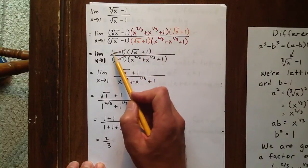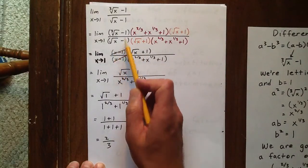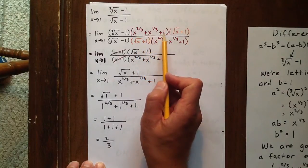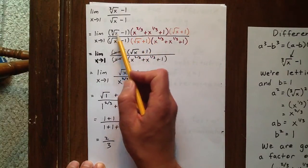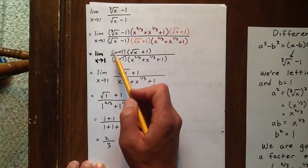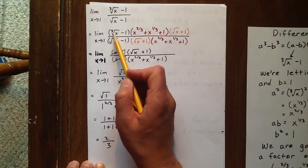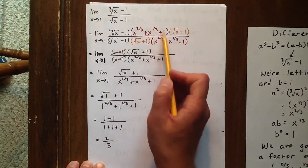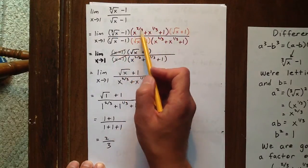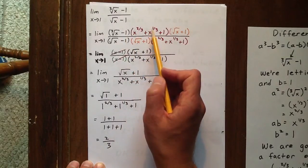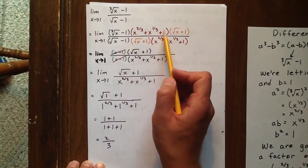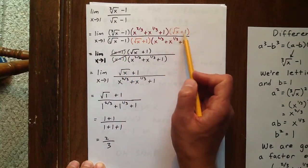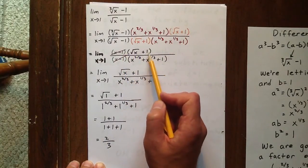Now, in the numerator, we have the cubed root of x minus 1 times x to the two-thirds plus x to the one-third plus 1. The cubed root of x times x to the two-thirds is x, and the cubed root of x times x to the one-third gives plus x to the two-thirds plus x to the one-third minus x to the two-thirds minus x to the one-third minus 1. So we've created the factor of x minus 1, and we still have the other factor of the square root of x plus 1 as well.